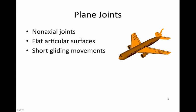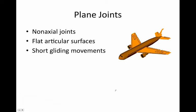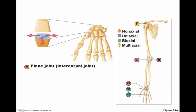Plane joints are non-axial joints. They have flat articular surfaces and they do short gliding movements. Take a look at those — a plane joint here, an intercarpal joint, showing this sliding movement that we see.